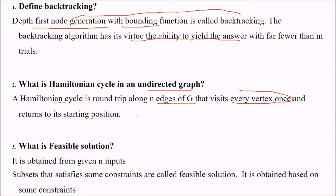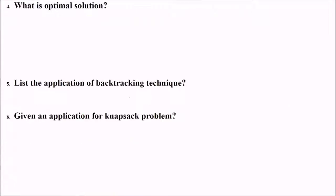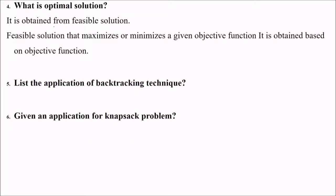What is feasible solution? You have n inputs and some constraints. Subsets that satisfy these constraints on these inputs are feasible solutions. What is optimal solution? We have various feasible solutions on n inputs with certain constraints. The feasible solution which maximizes or minimizes a given objective function is optimal solution, based on the objective function.